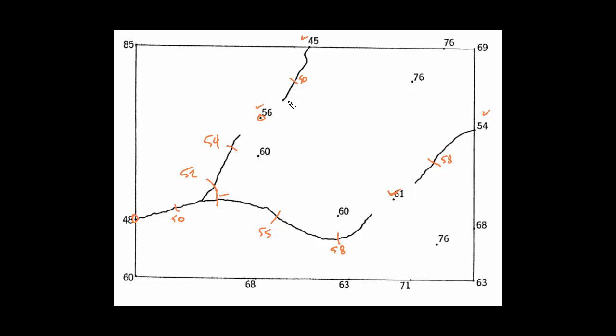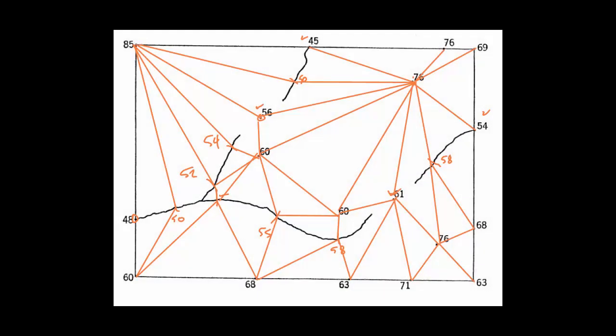Given that, now I can draw more lines than I would have otherwise had. I'm going to treat the stream as a break line. So let me draw these lines. Here's what it looks like when I get my lines all drawn.